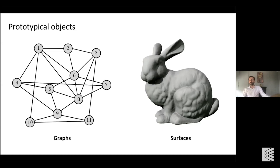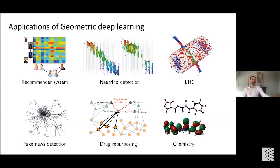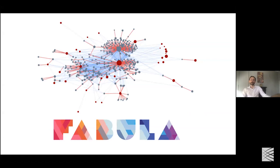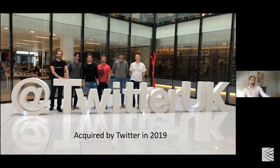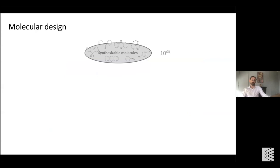The prototypical objects in this field are graphs and manifolds or surfaces. Because graphs are very abstract and universal mathematical abstractions of systems of relations and interactions, you can find works applying geometric deep learning to a very broad range of problems: recommender systems — which is what we're trying to do at Twitter — particle physics such as neutrino detection or the Large Hadron Collider, drug repositioning, computational chemistry, and fake news detection. Alex mentioned my work at Twitter — we had a startup that used geometric deep learning on graphs to detect fake news or misinformation, which was acquired by Twitter. That was probably the first commercial successful application of this technology.